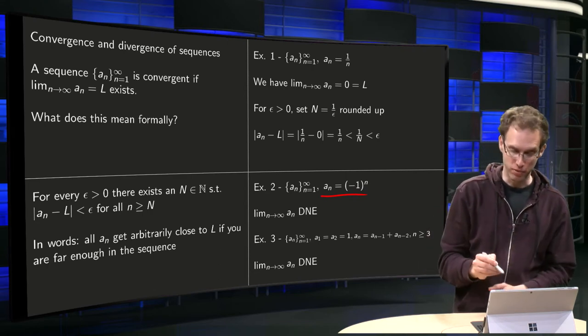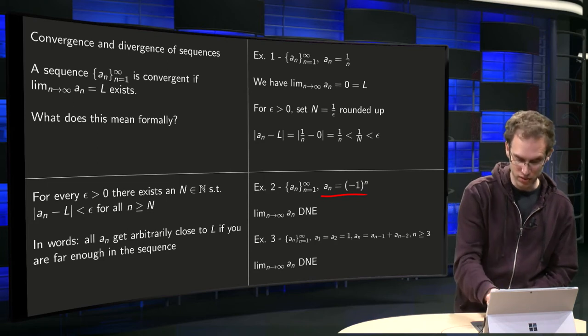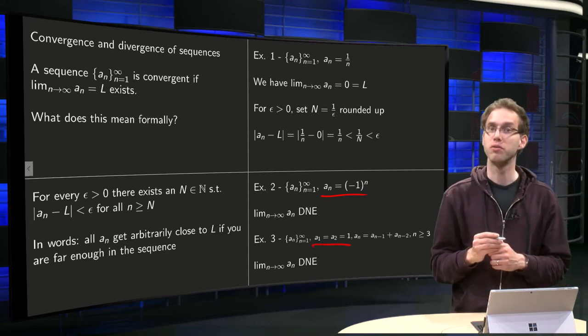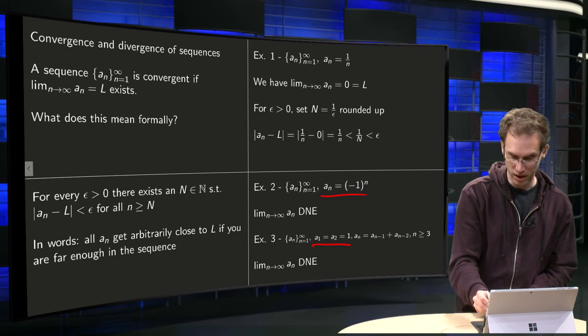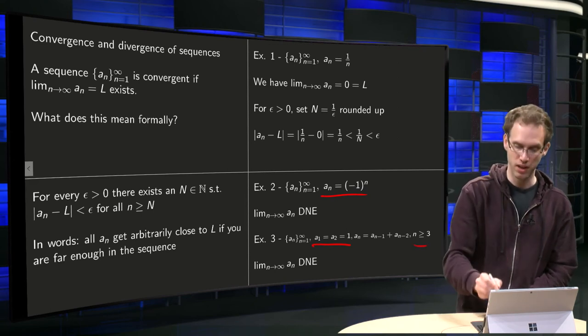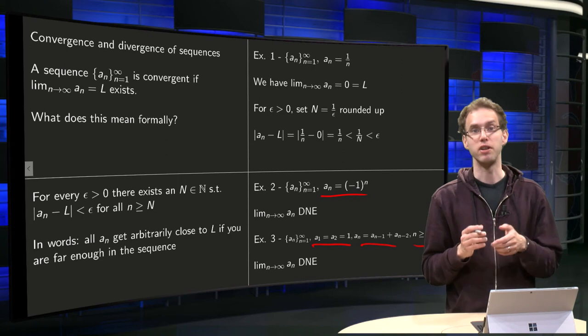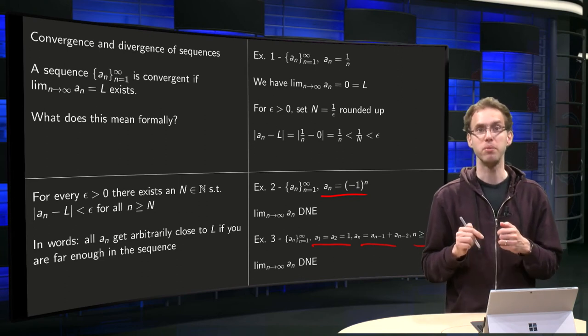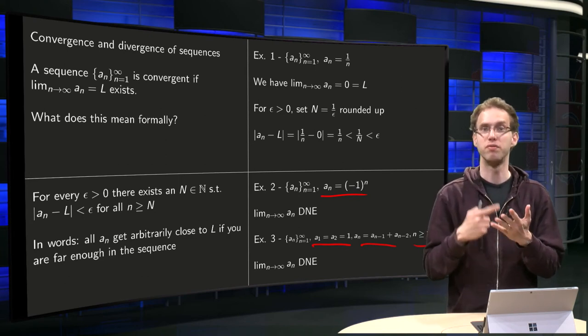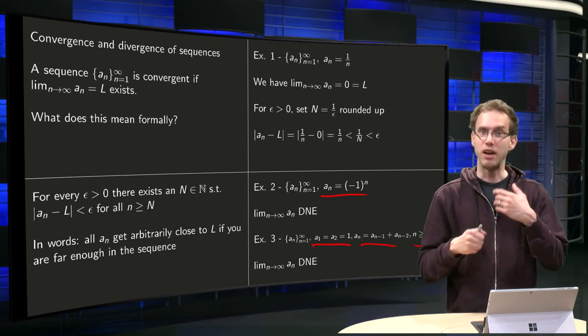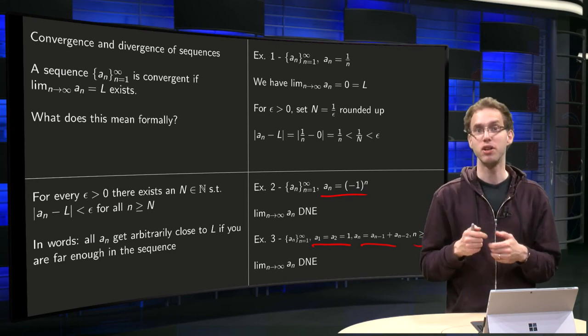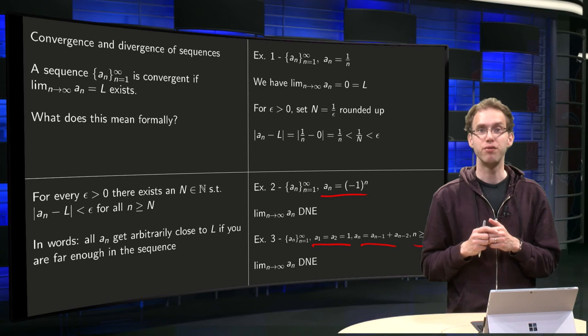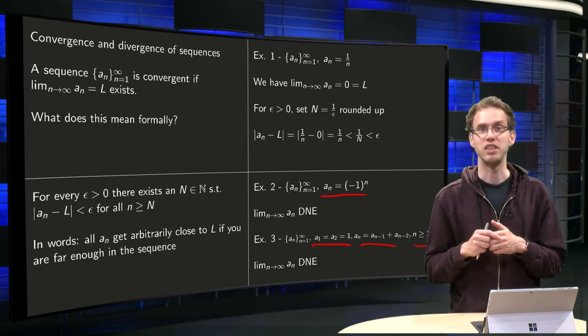Another example of a sequence—again we have our Fibonacci sequence. First two terms equal 1, and for n greater than or equal to 3, a_n is a_{n-1} plus a_{n-2}. So what happens? You get 1, 1, 2, 3, 5, 8, 13. I see the numbers get bigger and bigger. So if you take limit n to infinity, this limit does not exist.